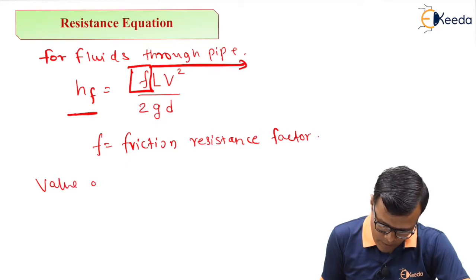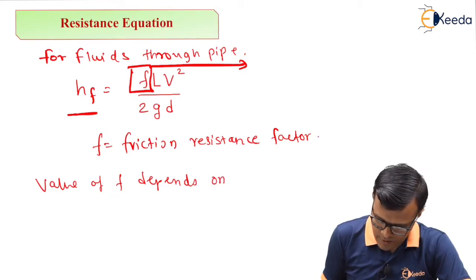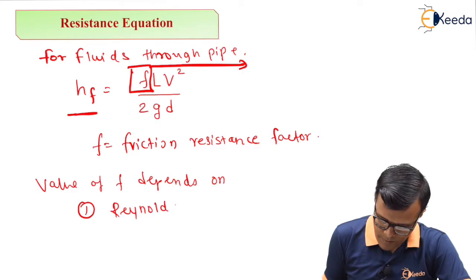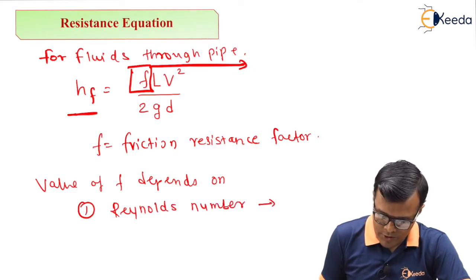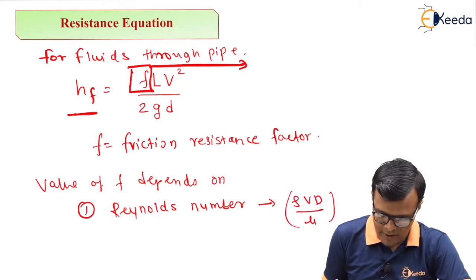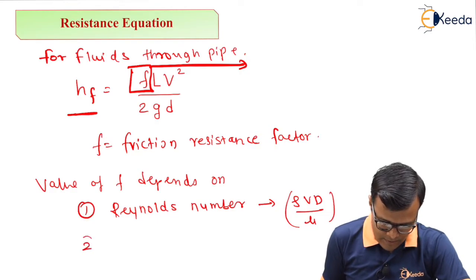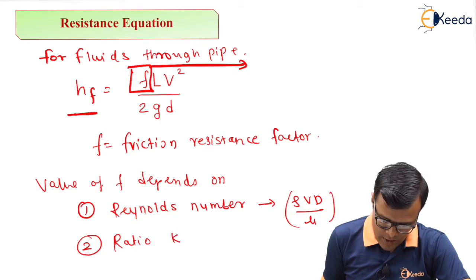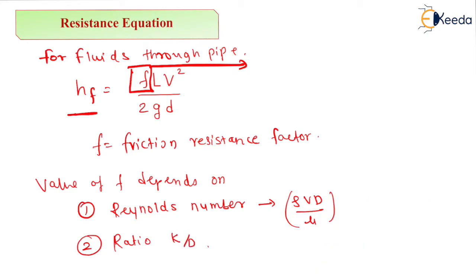Basically, value of F depends on first Reynolds number. We know the formula for Reynolds number is rho V D upon mu, so it depends on all these factors.